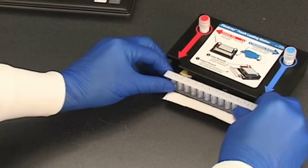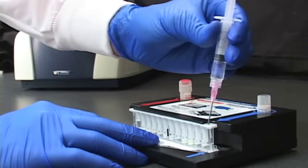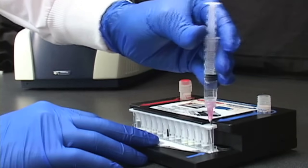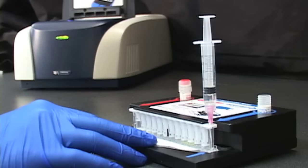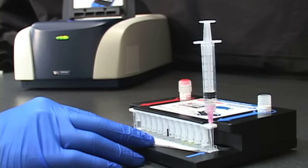To begin a FilmArray run, the pouch is first placed into the loading block. Then, hydration solution is injected into the pouch through the blue inlet port on the right. The vacuum in the FilmArray pouch automatically draws the correct volume, eliminating the need for precise measuring and pipetting.